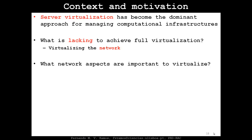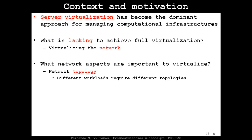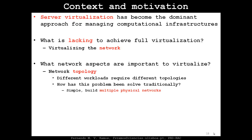The question is: what network aspects are important to virtualize? Network topology — we've seen that FlowVisor achieves some network topology virtualization. But the goal is that different workloads require different topologies. Traditionally, this problem is solved simply by building multiple physical networks, which is not ideal. FlowVisor started offering some solution, but it's not as complete as NVP.